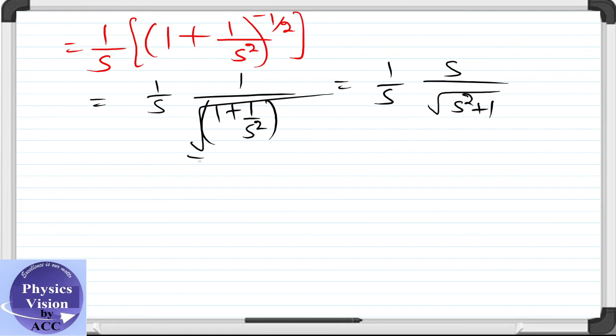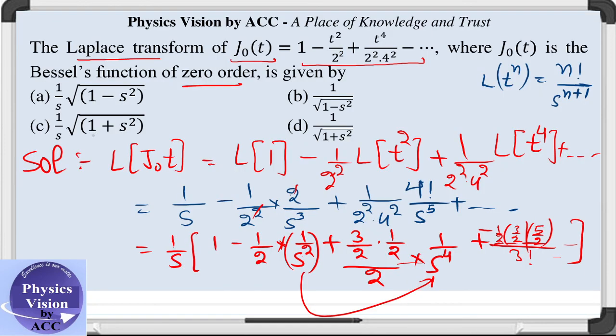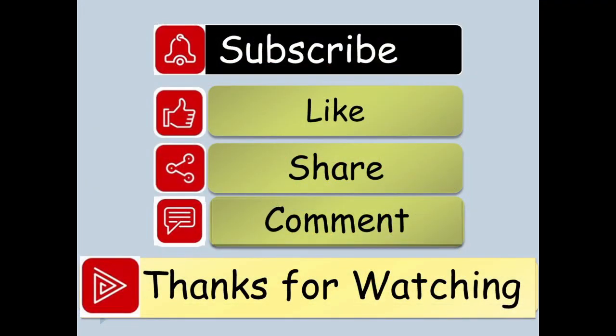That is 1 by under root of s square plus 1 is the correct answer to this question, which is option D. Hence, option D is the correct answer to this question. So stay tuned with us and thanks for watching our video.